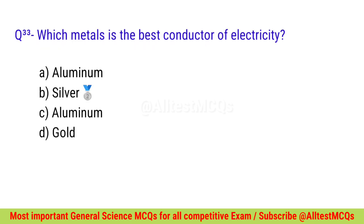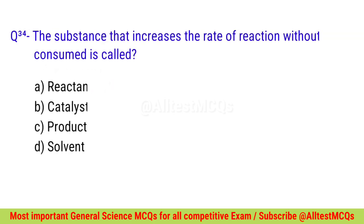Question number thirty-three: Which metal is the best conductor of electricity? Correct option is B — Silver. Question number thirty-four: The substance that increases the rate of reaction without being consumed is called? Correct option is B — Catalyst.